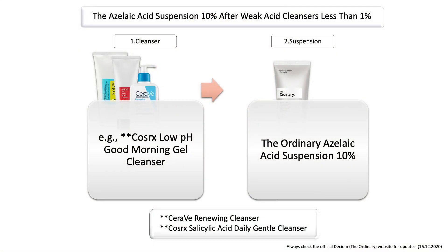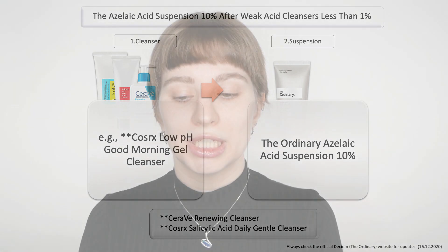You're also fine to use the Azelaic Acid Suspension with lower-strength exfoliating acid cleansers that contain around 0.5% — which is about the maximum typically included in cleansers. Examples include the COSRX Low pH Good Morning Gel Cleanser, the CeraVe SA Renewing Cleanser, and the COSRX Salicylic Acid Daily Gentle Cleanser. These cleansers do contain salicylic acid but only a small amount, so using them in the same routine is fine since you're rinsing them off. Azelaic acid works a little differently from standard AHA or BHA acids, so combining them with rinse-off acids is a great option.